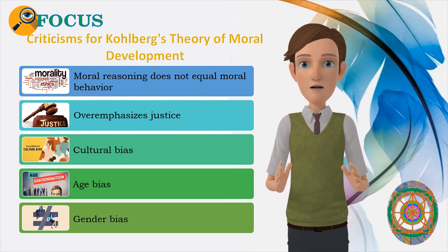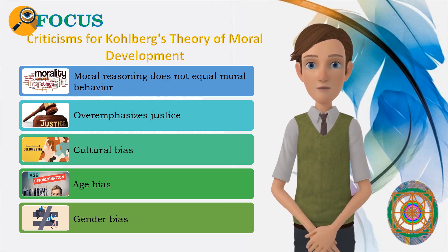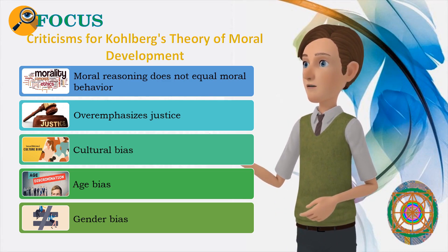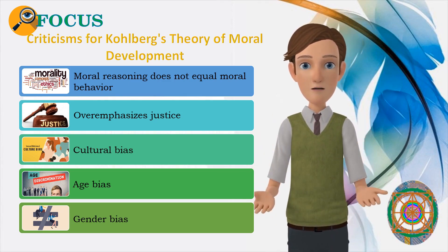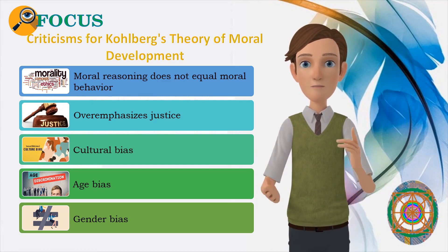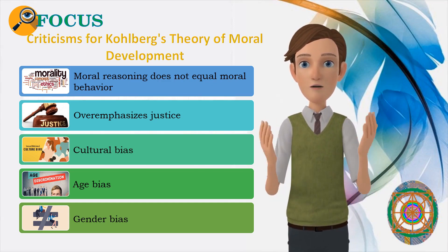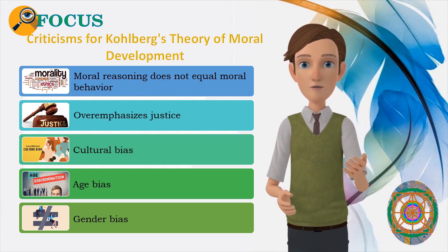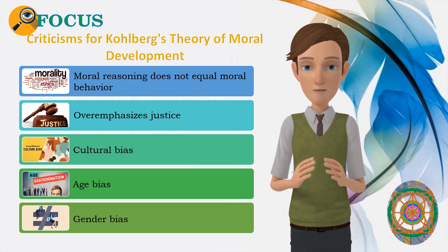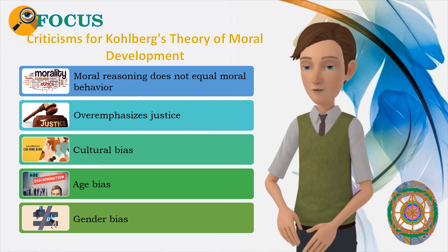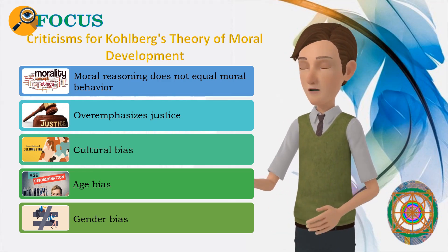Fifth, gender bias: Kohlberg's critics, including Carol Gilligan, have suggested that Kohlberg's theory was gender-biased since all of the subjects in his sample were male. Kohlberg believed that women tended to remain at the third level of moral development because they place a stronger emphasis on things such as social relationships and the welfare of others. While Kohlberg's theory of moral development has been criticized, it played an important role in the emergence of the field of moral psychology. Researchers continue to explore how moral reasoning develops and changes through life, as well as the universality of these stages. Understanding these stages offers helpful insights into the ways that both children and adults make moral choices and how moral thinking may influence decisions and behaviors.